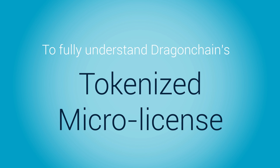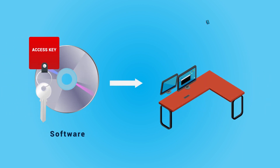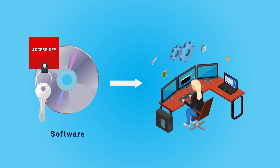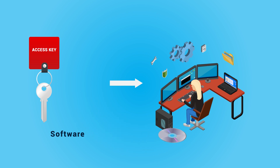If you want to fully understand DragonChain's tokenized micro license, one needs to understand and consider the history of software licenses. With the advent of proprietary software in the late 1970s and 80s, software was typically sold under license for use.